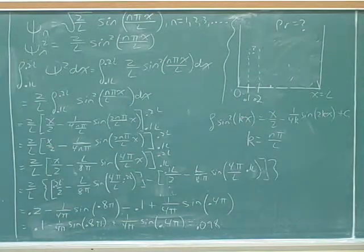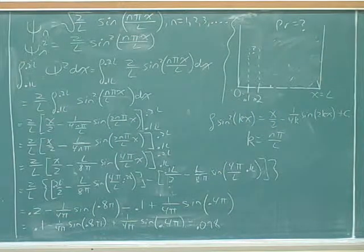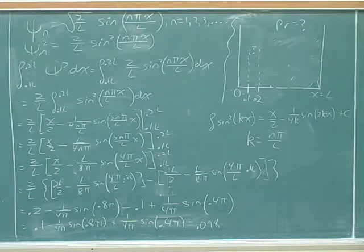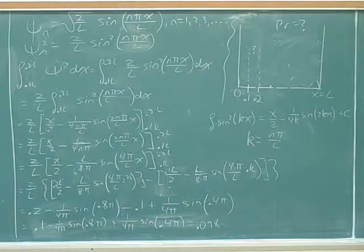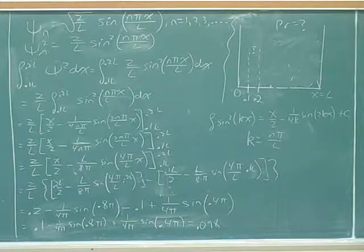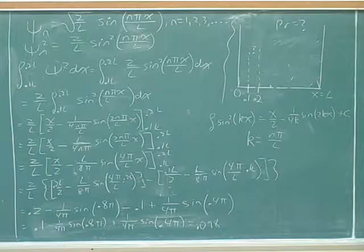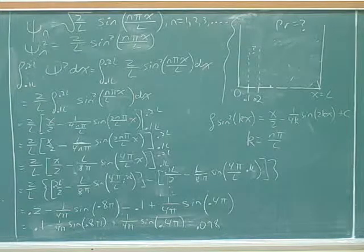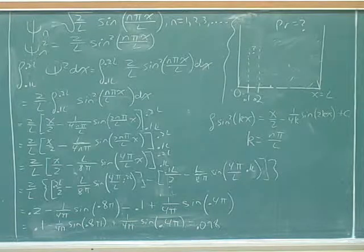Yeah, something went wrong with how you typed it into the calculator. So let's see. We've got 0.1 minus 1 divided by 4 pi times sine 0.8 pi plus 1 divided by 4 pi.